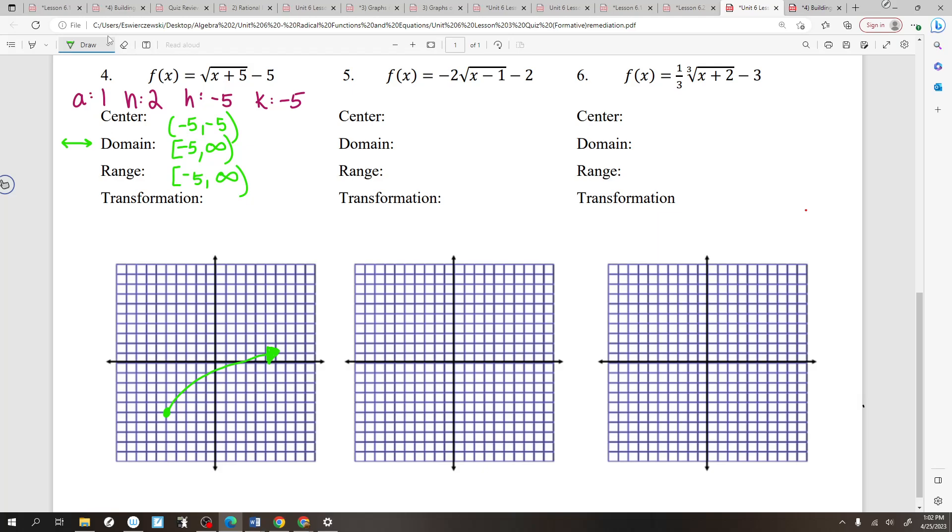So, transformations. Hey, is there an A value that is not 1? Or is A 1? A is 1, so there's no shrink or stretch. So, remember, the mother function starts in the middle. So, if the mother function starts in the middle, where did this get moved to? Give me directions. Left. How many? Then what? Up or down? Down. How many? Five. We're done.